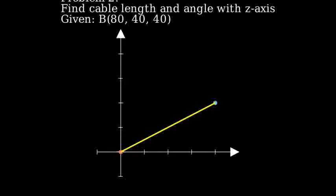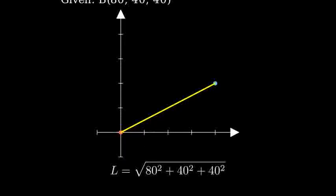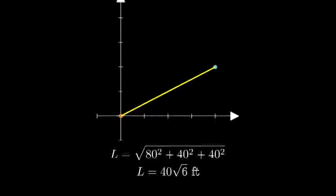Let's find the cable length first using the distance formula. The length equals the square root of 80 squared plus 40 squared plus 40 squared. This simplifies to 40 times the square root of 6 feet.